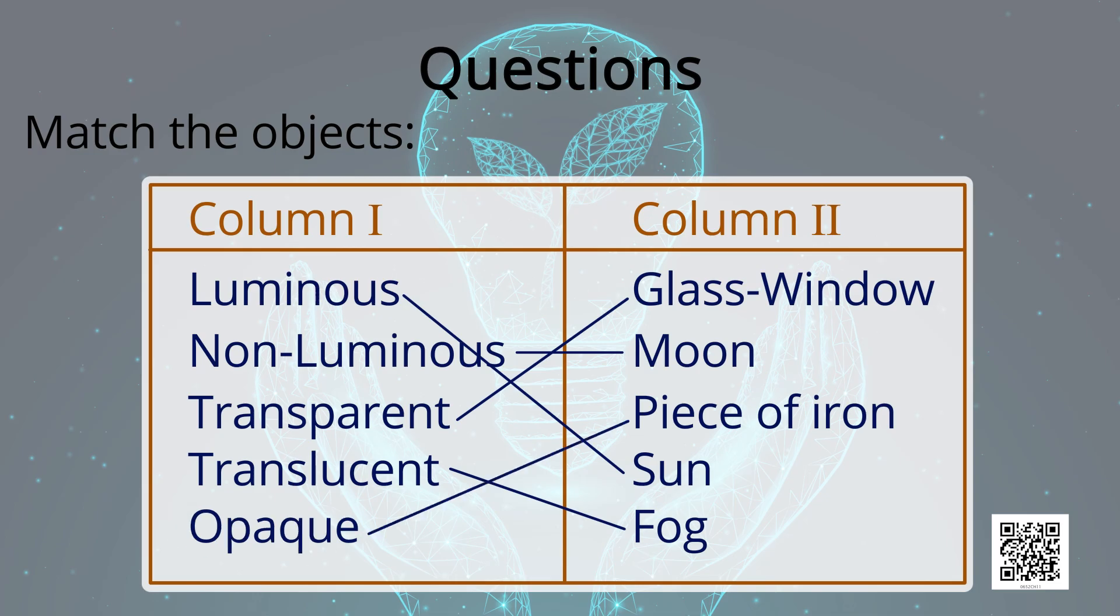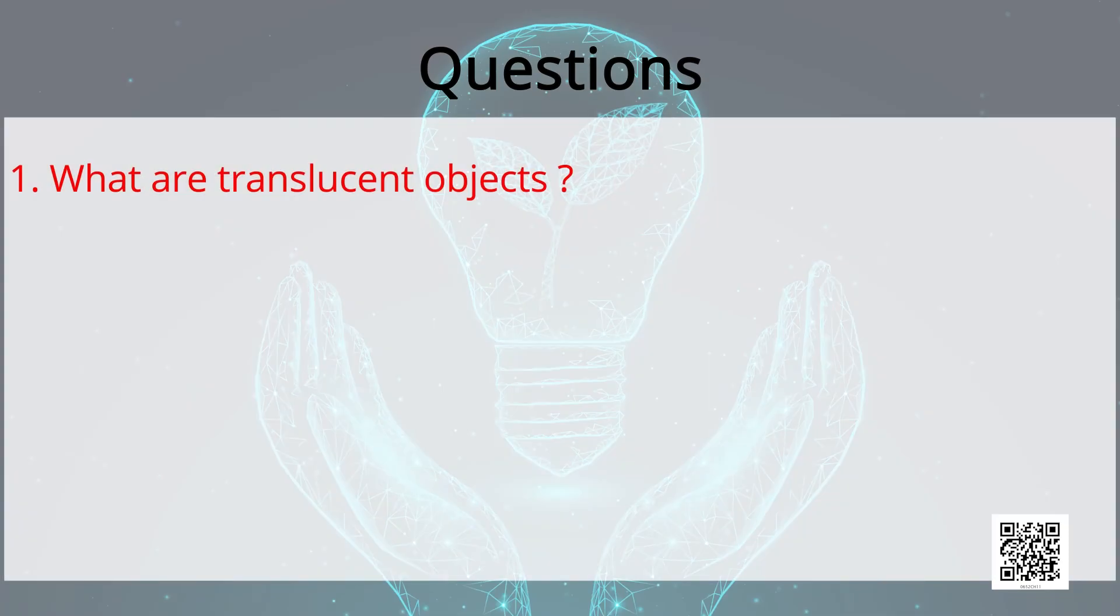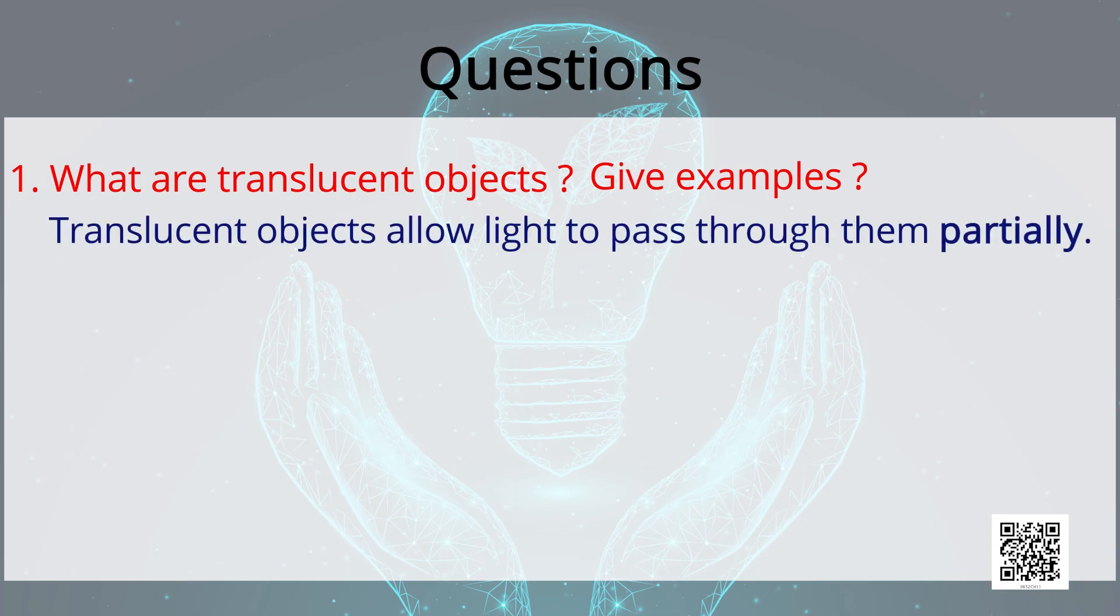My next question is what are translucent objects? Give examples. And the answer is translucent objects allow light to pass through them partially. And some examples are smoked glass and fog.